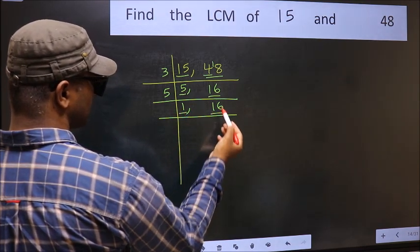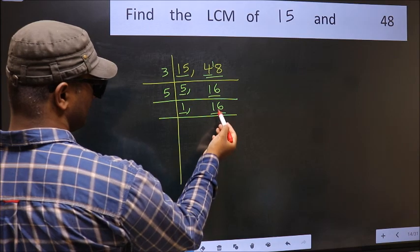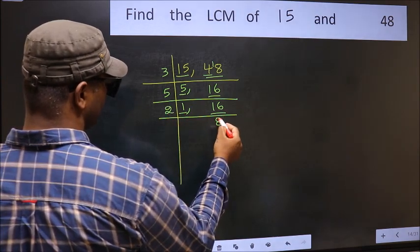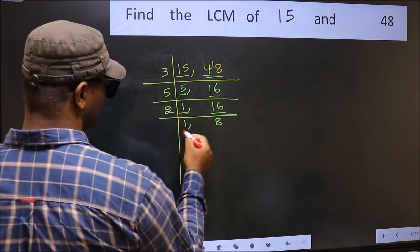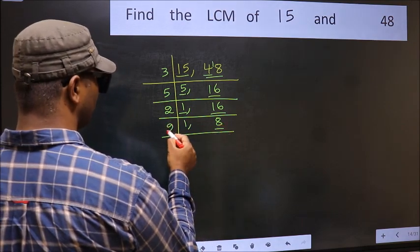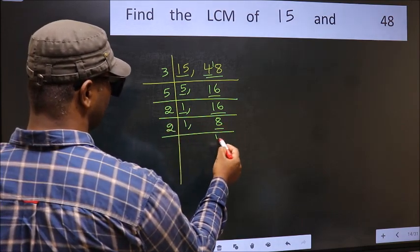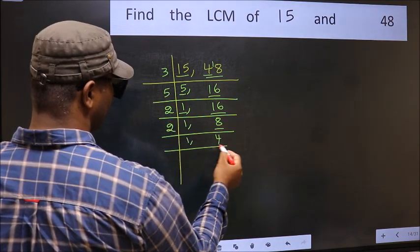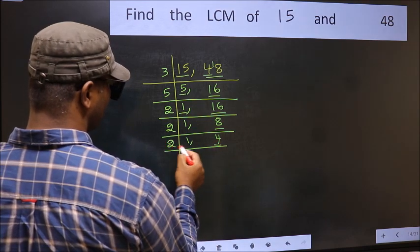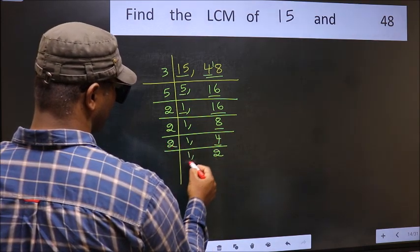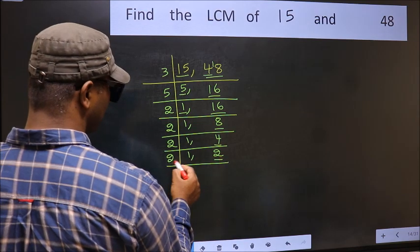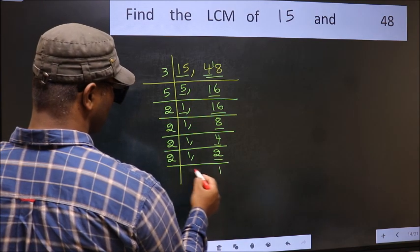Focus on the next number, 16. 16 is 2 eights 16. Now we have 8. 8 is 2 fours 8. Now we have 4. 4 is 2 twos 4. Now we have 2 — 2 is a prime number, so 2 ones 2.